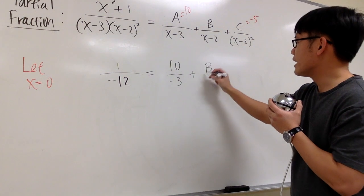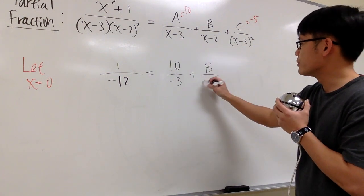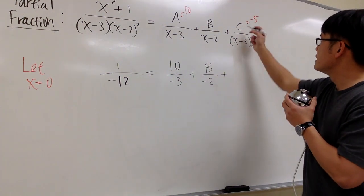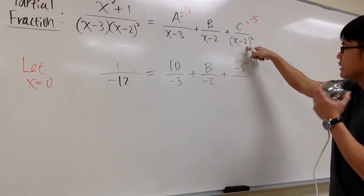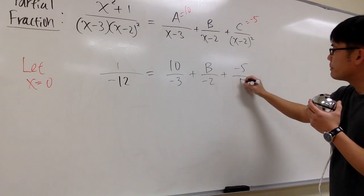Plus B, we don't know yet, over 0 minus 2, so it's negative 2. Plus C, we know, which is negative 5, over 0 right here. 0 minus 2 is negative 2, square that, you get positive 4.